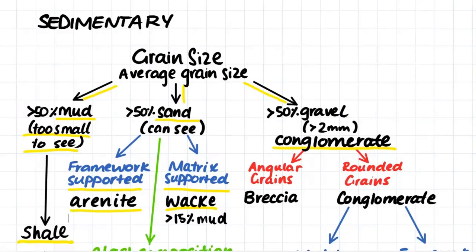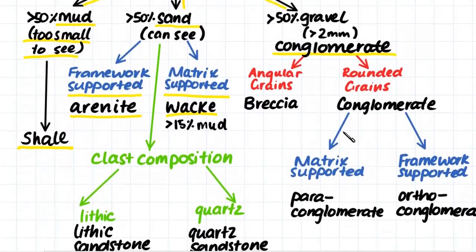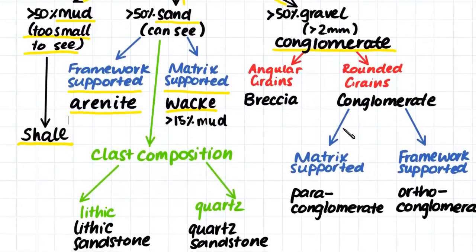So the next thing we look at when we're considering sandstone is to look at the clast composition. A lithic sandstone is a sandstone which is made up of mainly lithic particles. Lithic means that the particles can be any sort of weathered rock, whether that be igneous, metamorphic, or sedimentary.